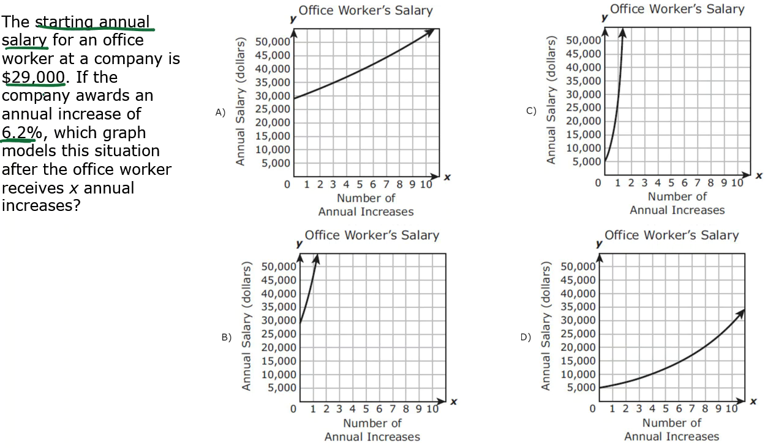That means my graph should start at $29,000 as a Y value. Looking at the graphs, I'm going to cross out answer choices that don't start anywhere near $29,000, and C definitely does not. $29,000 should be way up here as a starting salary at year zero, so it couldn't be C.